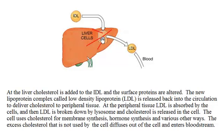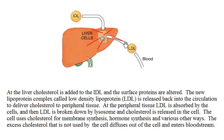The liver adds cholesterol to this lipoprotein, and that addition of cholesterol again changes the density of this lipoprotein. So now it becomes low density lipoprotein. From intermediate density lipoprotein, as more and more cholesterol is added to it, it becomes low density lipoprotein. This low density lipoprotein leaves the liver and is released into the circulation. The function of LDL is mainly to transport cholesterol to the cells, and it will deliver this cholesterol to the cells.